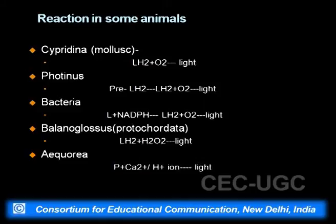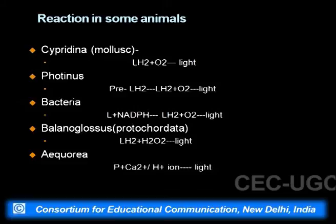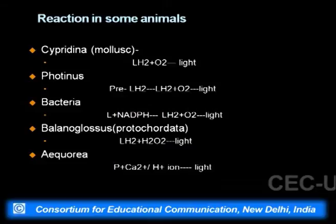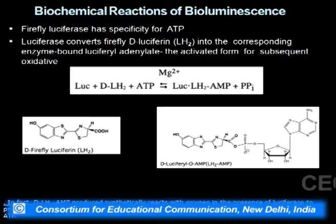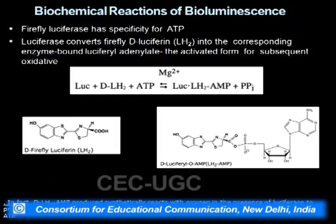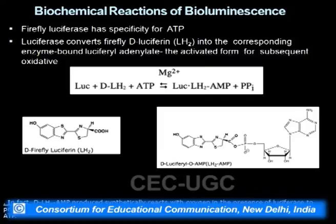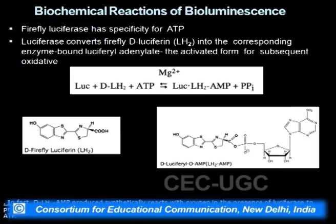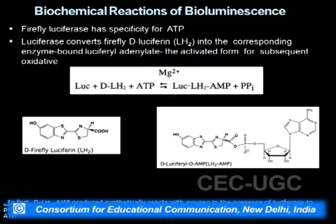Firefly luciferase has very high specificity for ATP, which is exploited in biochemical assays — coupled luciferase reactions are used to monitor ATP uptake or generation. Luciferase first converts D-luciferin (dehydroxyluciferin, DLH2) into the enzyme-bound luciferyl adenylate. LH2 plus AMP forms the activated form ready for subsequent oxidation by oxygen. ATP always requires magnesium to stabilize the phosphate chain; luciferyl-AMP is formed along with inorganic phosphate. Oxygen then breaks down with CO2 released, and oxygen attached to the luciferyl component becomes the excited species — either oxyluciferin enolate or keto form — which emits light as it returns to ground state.